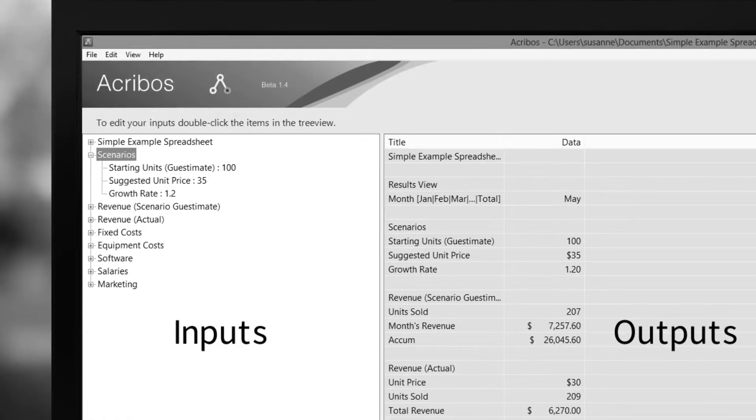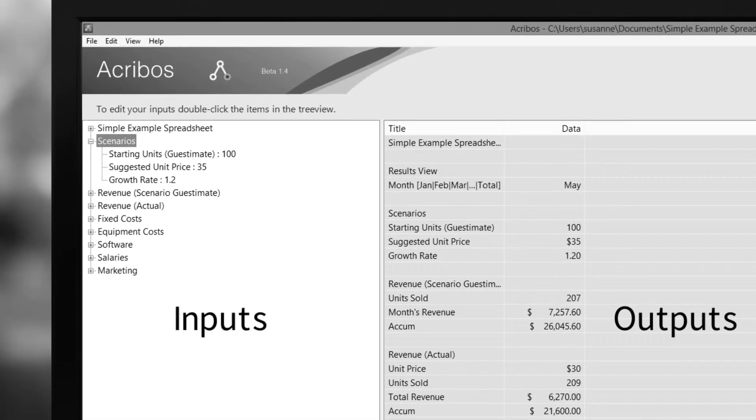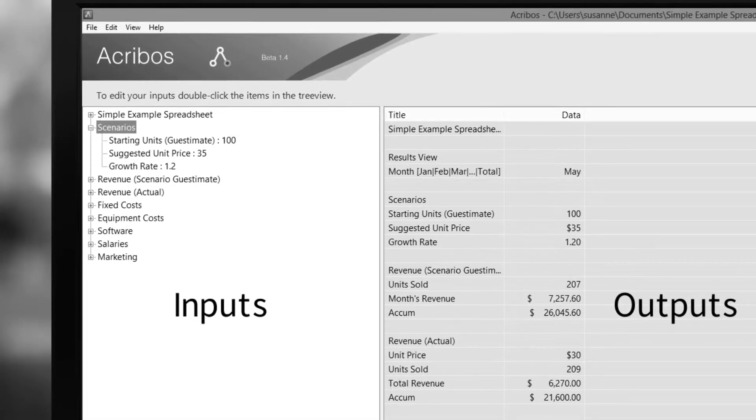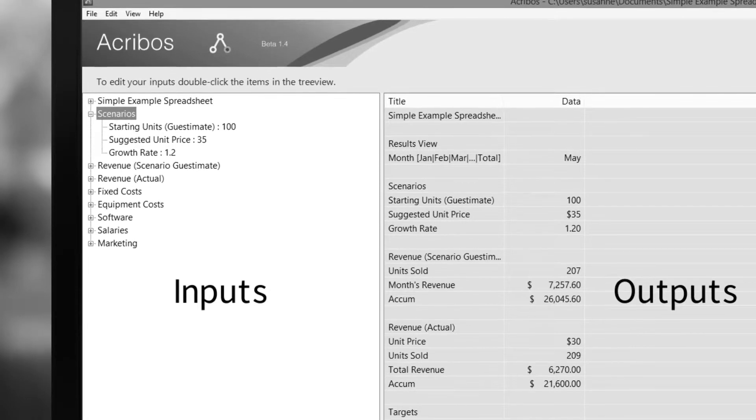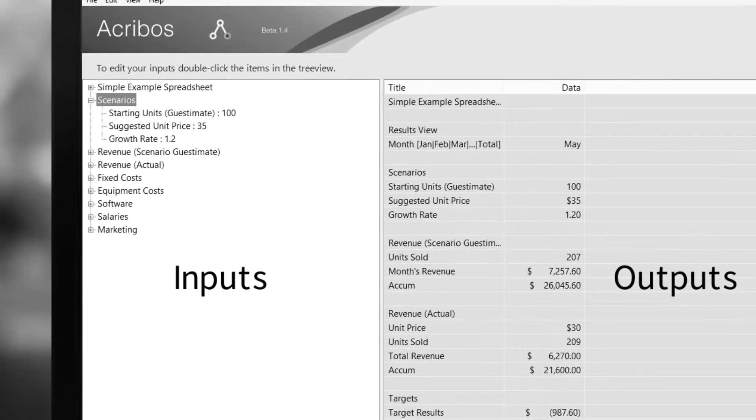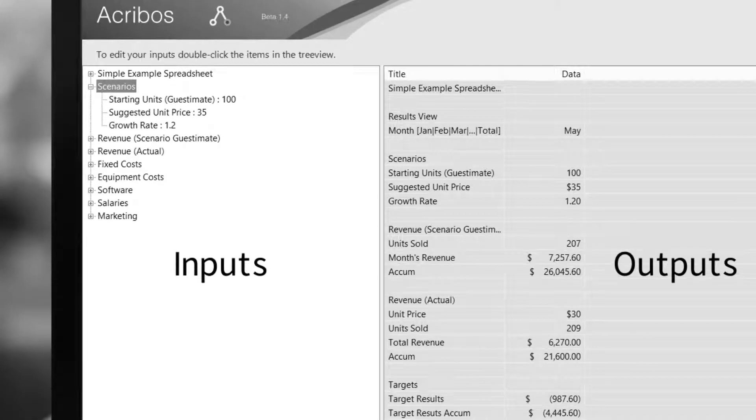Acrobos can also show you unused cells that are being referenced as inputs. Acrobos allows you to input content for individual cells or cells in contiguous or non-contiguous ranges.